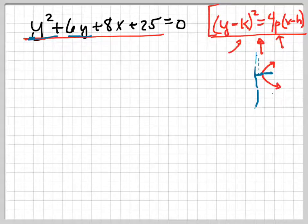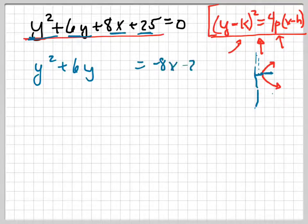Let's go ahead and complete the square. Actually, you know what I'll do first is I'm going to move everything over. I'm going to move these things over to the right side. So negative 8x minus 25.